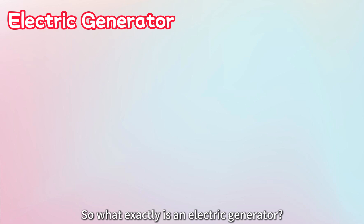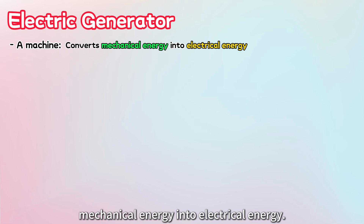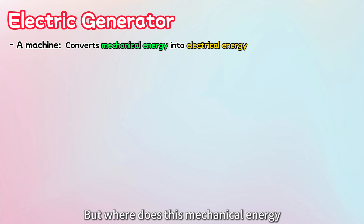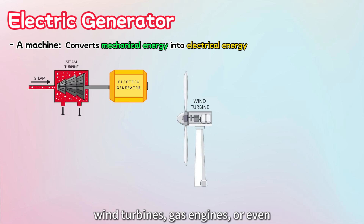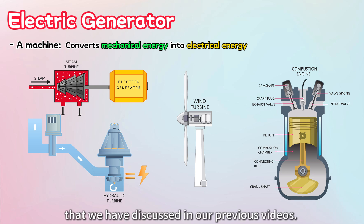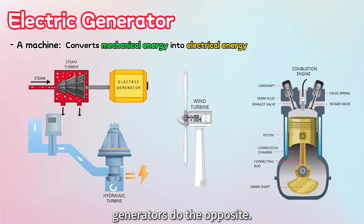What exactly is an electric generator? Simply put, it's a machine that converts mechanical energy into electrical energy. But where does this mechanical energy come from? It can be from steam turbines, wind turbines, gas engines, or even hydraulic turbines. In fact, a generator works in the reverse of an electric motor that we have discussed in our previous videos. While motors take electrical energy and convert it into mechanical movement, generators do the opposite.